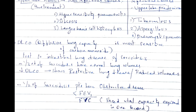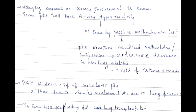In obstructive pattern, FEV1/FVC is reduced. Varying degrees of airway involvement are seen; some patients have airway hyper-reactivity tested by a positive methacholine test — a 20% or more decrease in breathing ability indicates asthma-like condition. Pulmonary arterial hypertension is seen in 5% of sarcoidosis patients, either due to vascular involvement or lung fibrosis.